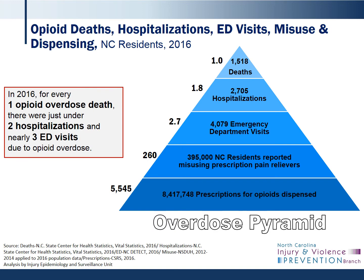The concept of the injury pyramid, or in this case the overdose pyramid, is that deaths are only the smallest tip of a much larger burden on the healthcare system and society. In 2016 in North Carolina, for every one opioid overdose death, there were just under two hospitalizations and nearly three ED visits due to opioid overdose. The National Survey on Drug Use and Health estimates that over 395,000 people in North Carolina misused prescription pain relievers in the last year, while the Controlled Substance Reporting System shows that over 8 million prescriptions for opioids were dispensed. So for every opioid overdose death in North Carolina, there were an estimated 260 residents misusing prescription pain relievers and 5,545 opioid prescriptions dispensed.